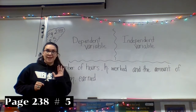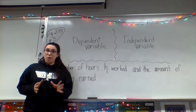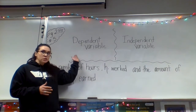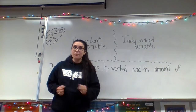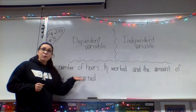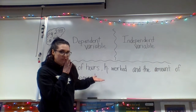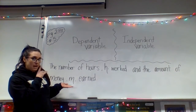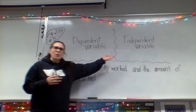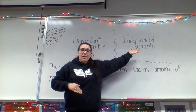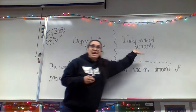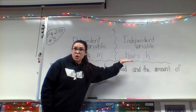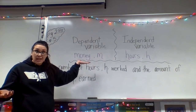Let's look at page 238, number five. These problems give us a scenario and we need to identify the dependent and the independent variable. Our first scenario is the number of hours worked — using H — and the amount of money earned — using M. Which one can change on its own, and which one changes because of that? The independent variable is the number of hours worked, and the dependent variable is the money you actually make.